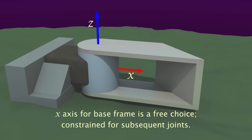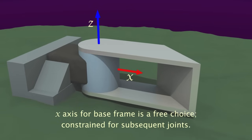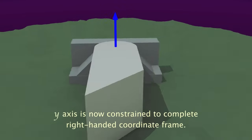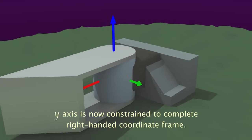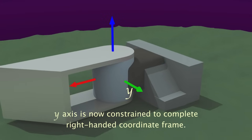Since this is the first joint, the x-axis is a free choice. For later joints, each x-axis will point away from the previous joint. The y-axis simply completes the right-handed reference frame.